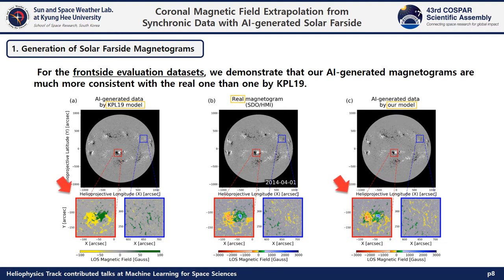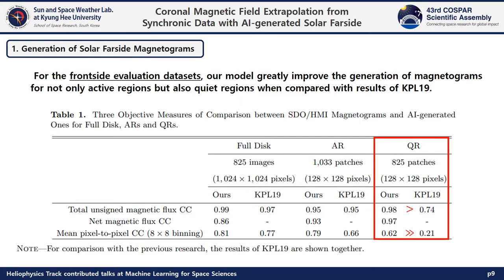Our model generates strong magnetic fields of an active region, and distributions of magnetic polarity look like real ones. Correlation coefficients of total absolute magnetic flux, net magnetic flux, and mean pixel-to-pixel correlation for full disk, active regions, and quiet regions all show that our model greatly improved the generation of magnetograms for not only active regions but also quiet regions compared with results of Kim et al.